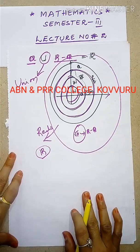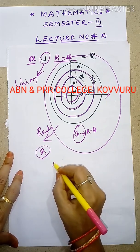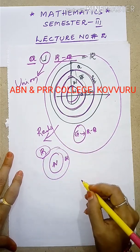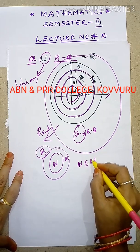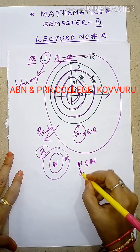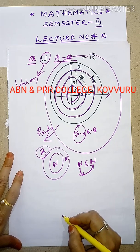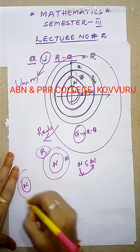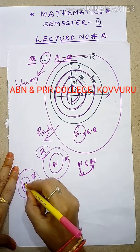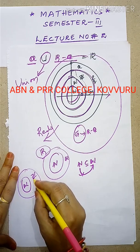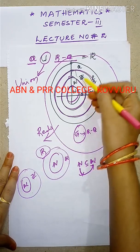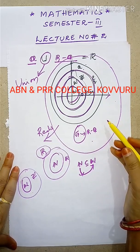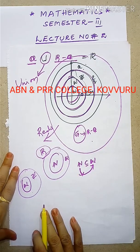Now applying subset and superset to the number system: natural numbers are a subset of whole numbers — natural numbers are contained in whole numbers. Whole numbers are a subset of integers. Similarly, integers are a subset of rationals, rationals are a subset of reals, and irrationals are also a subset of reals.